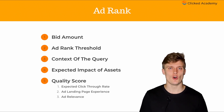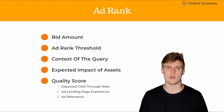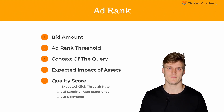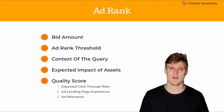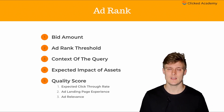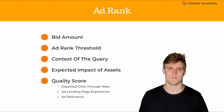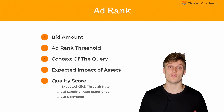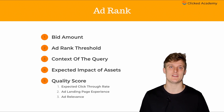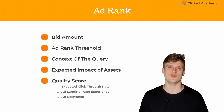Number three is context of the query. The context of the query is a determining factor of ad rank. This looks at elements such as the search term, the person's location, the time of search, the nature of the search, and other real-time signals. If the user is looking for a local restaurant, then the algorithm will reward local advertisers and give them a higher ad rank to try and improve the user's experience.